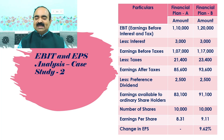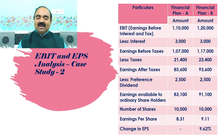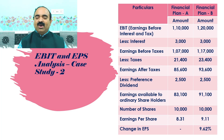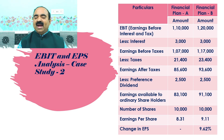For calculating earnings per share, we have to take the number of shares. Number of shares under both financial plans is 10,000. By dividing earnings available to ordinary shareholders of Rs. 83,100 under Financial Plan A by 10,000, I got earnings per share of Rs. 8.31. By dividing earnings available to ordinary shareholders of Rs. 91,100 under Financial Plan B by 10,000, the earnings per share is derived as Rs. 9.11. In the last row of the table, I had calculated change in EPS as 9.62%.